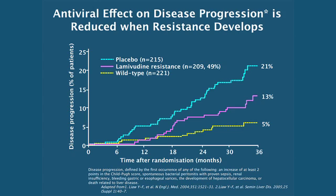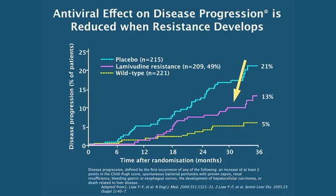This is best exemplified by the Liao study published in the New England Journal of Medicine, carried out in patients with cirrhosis with the endpoint of disease progression. In untreated patients, roughly 20% progressed over two to three years, consistent with the natural history of chronic hepatitis B. When lamivudine was used with no emergence of resistance, only 5% of patients progressed. However, if lamivudine resistance emerged, all the benefits of lamivudine were rapidly lost, and lamivudine-resistant patients started to catch up with untreated patients, negating the application and use of lamivudine entirely.